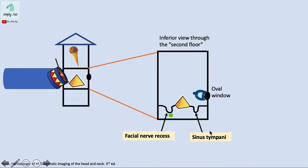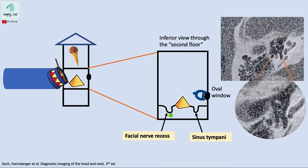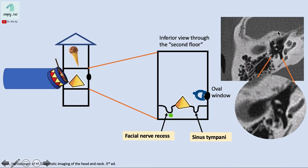Here is an axial image — can you see the stapes? There's the stapes. Following these depressions inferiorly, we see the pyramidal eminence, a depression laterally which is the facial nerve recess, and another depression medially which is the sinus tympani.